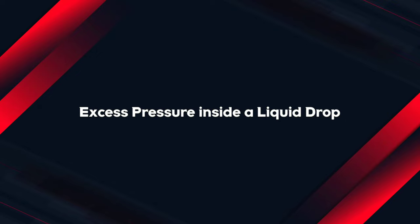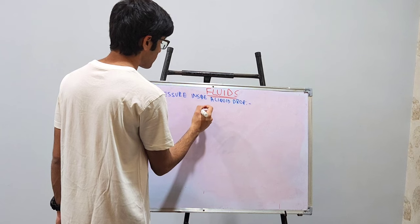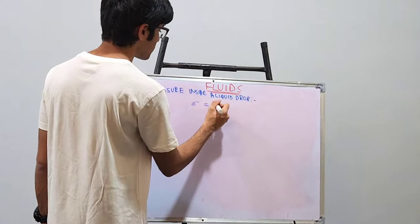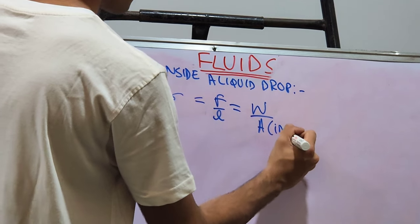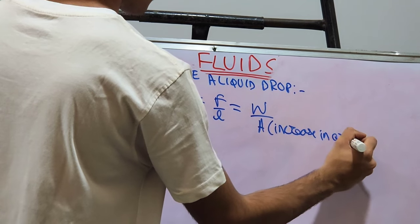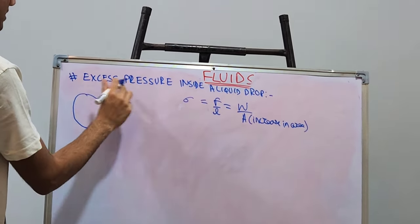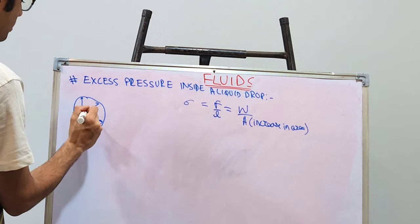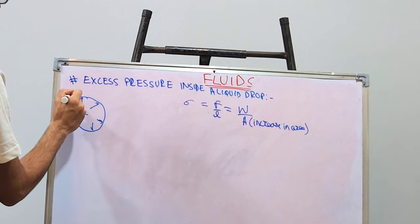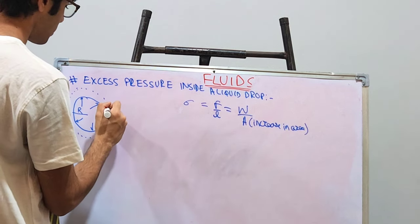Let us move on to the last topic: excess pressure inside a liquid drop. Before understanding this we need to understand surface tension. Surface tension is denoted by σ and equals force upon length, and also equals work done upon the increase in area. Now let us look at a liquid drop — there is excess pressure inside it, so pressure is being applied in all directions. Let's say the original radius of this liquid drop is capital R, and when pressure is applied in all directions it becomes slightly bigger by distance dr.